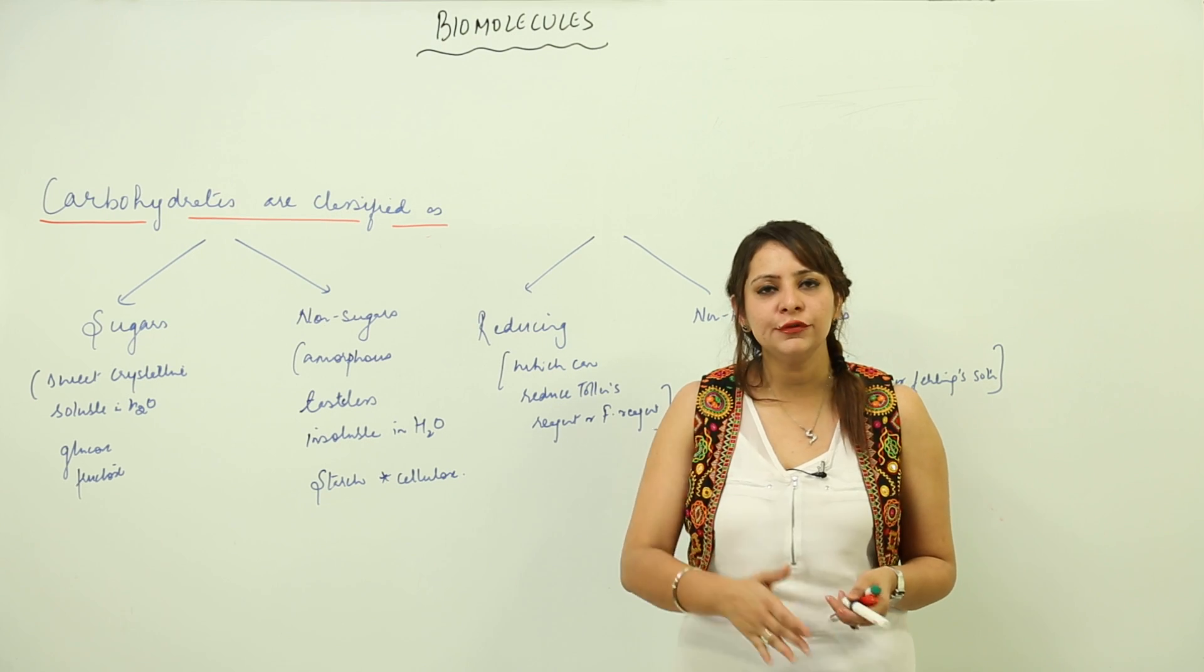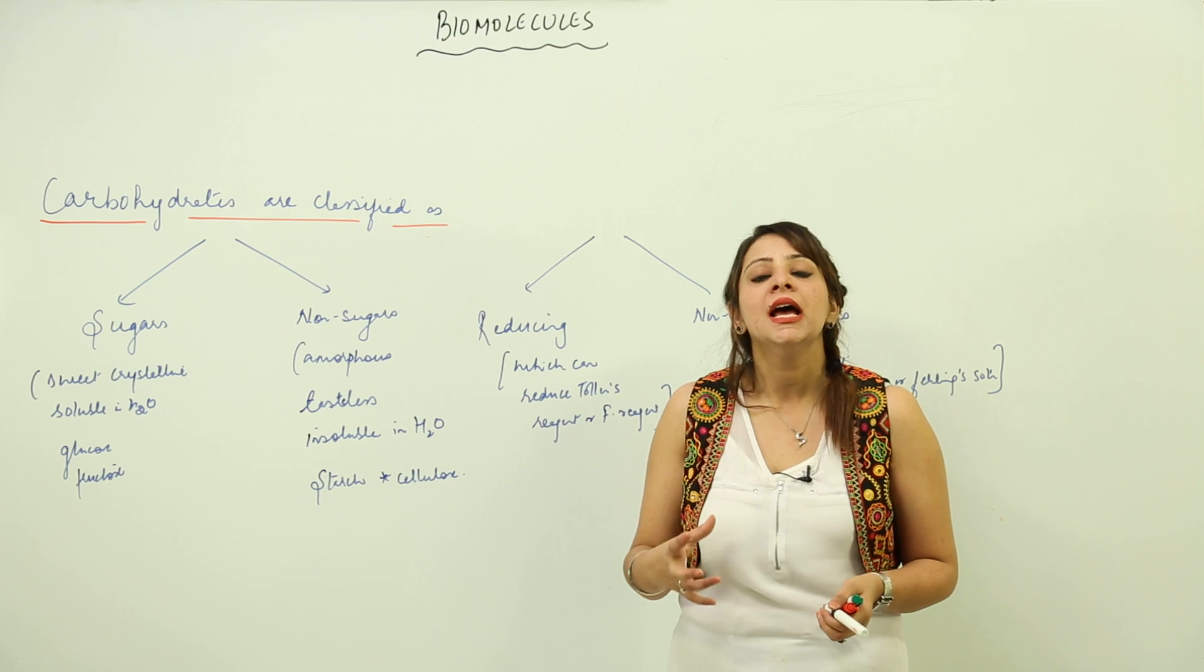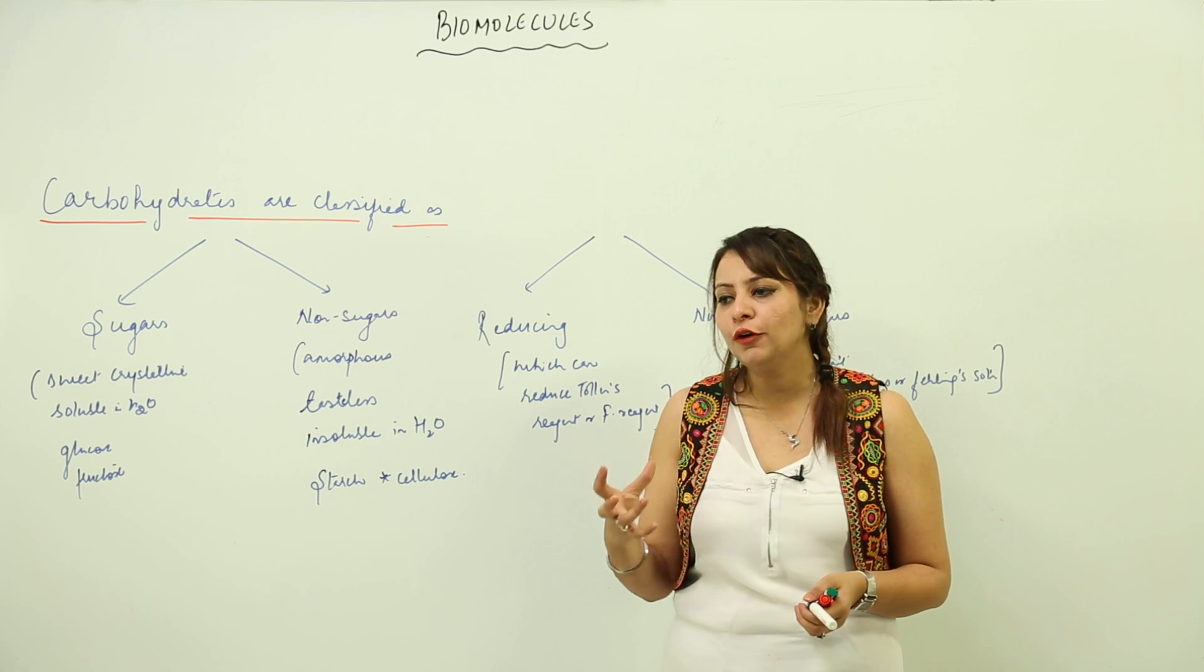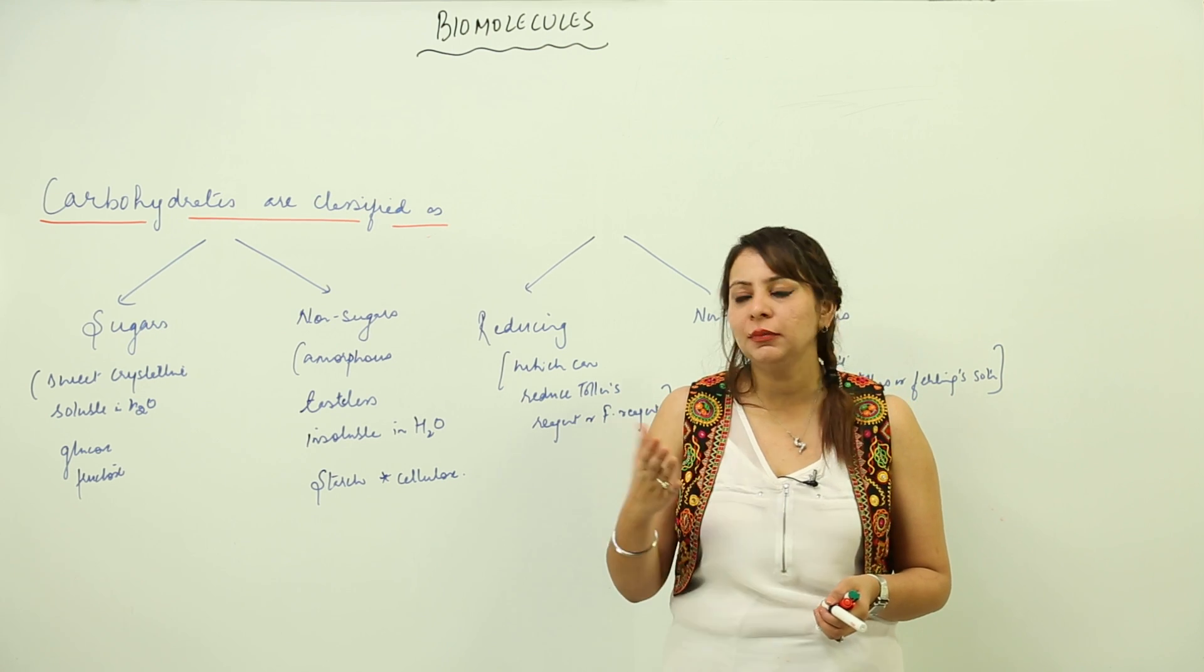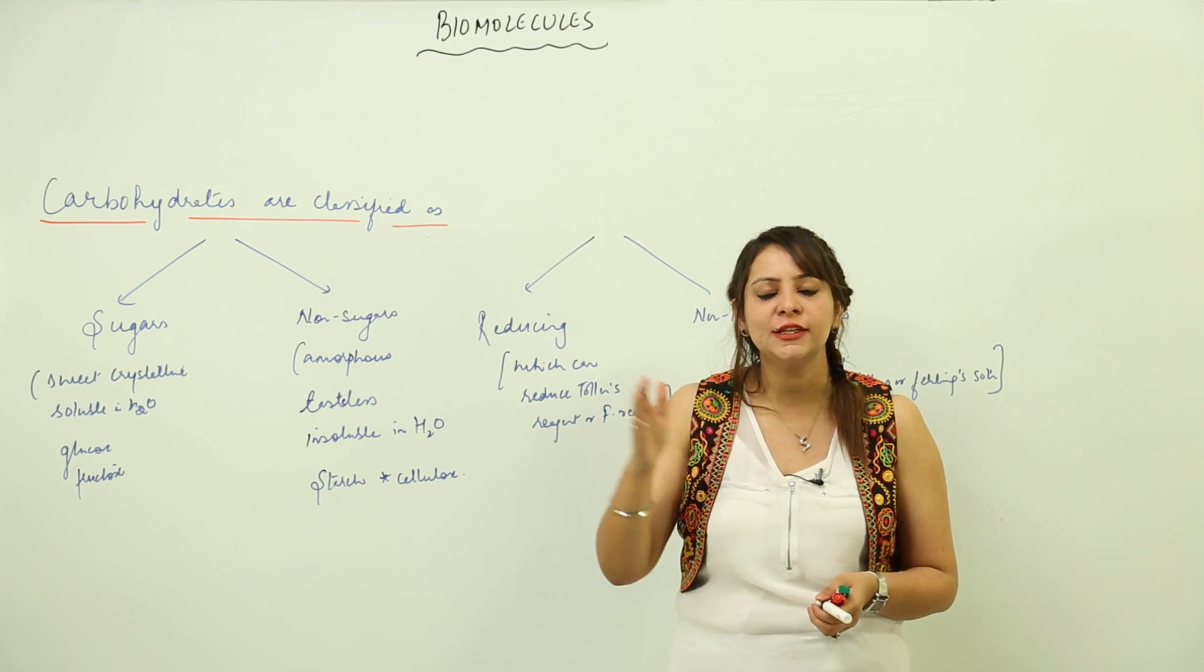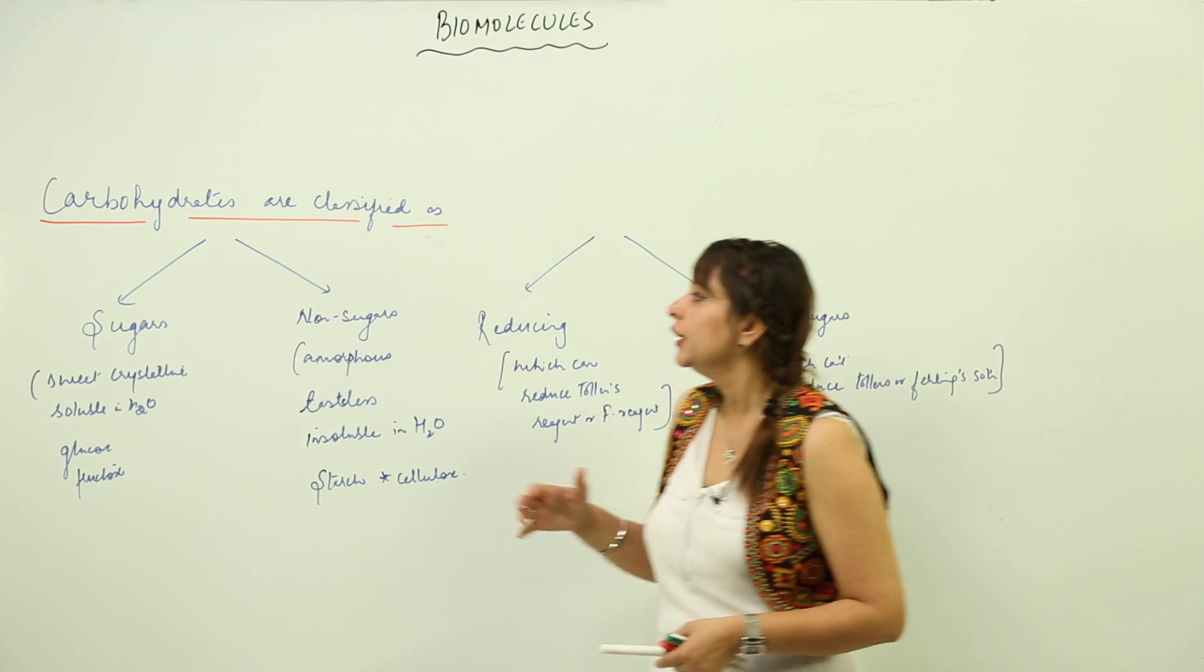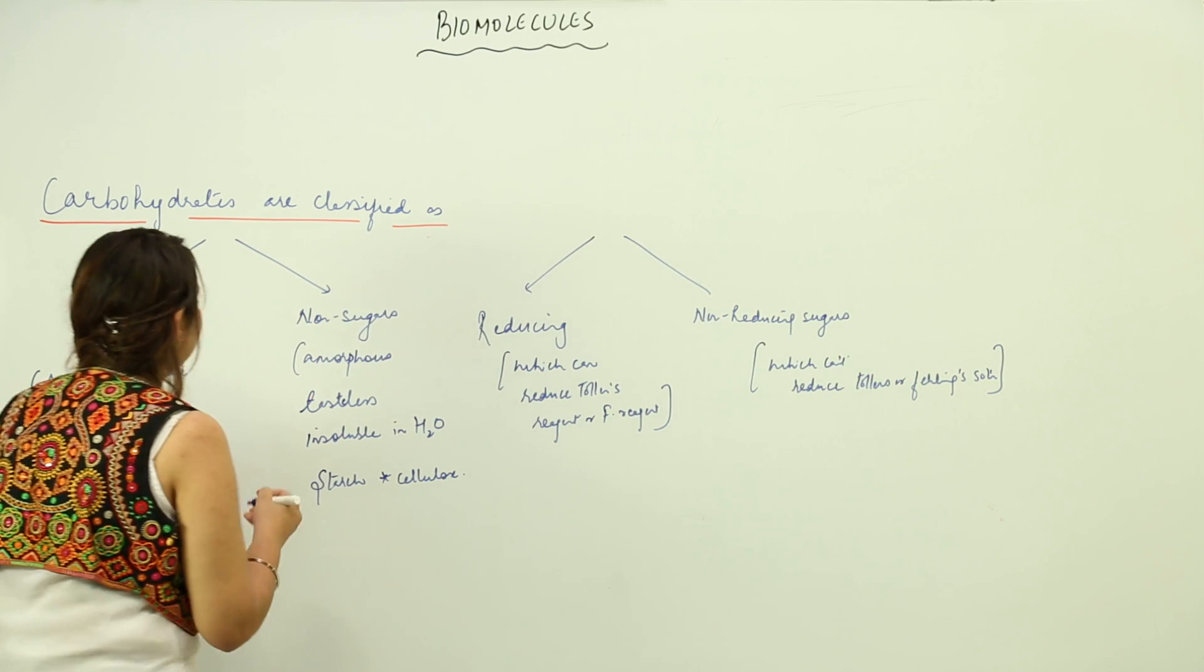If we look at the classification of carbohydrates, we have further classification depending upon the number of components present in sugar—that means the number of sugar molecules present. We have already done monosaccharides, oligosaccharides, and polysaccharides, but now we have a few more classifications. One is that we can classify depending upon their form, taste, or solubility in water.